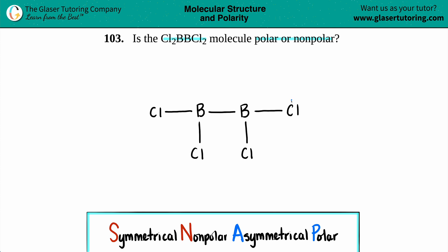Each chlorine to get the octet needs six electrons. So one, two, three, four, five, six. One, two, three, four, five, six. One, two, three, four, five, six. And then one, two, three, four, five, six.